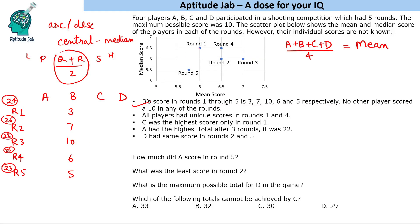For Round 1, the median score is 6.5, so the two central scores sum to 13. Since the grand total is 24, the lowest plus highest must equal 11. We know B scored 3. Let's assume B is not the lowest — say the lowest is 2 and highest is 9. Then the remaining two scores must add up to 13. But one of them is 3 (B), so the other would need to be 10, which is not possible since the highest is assumed to be 9.